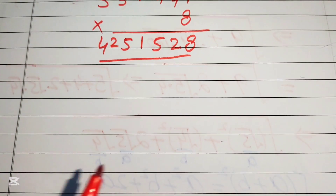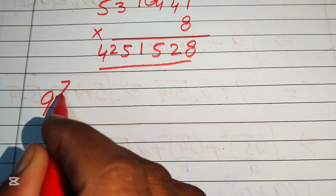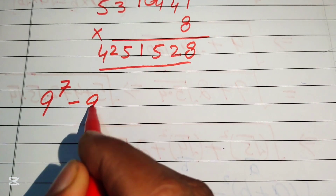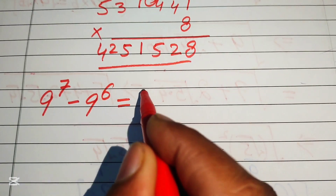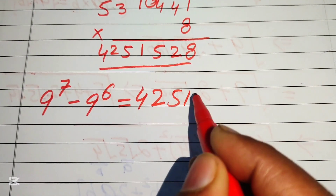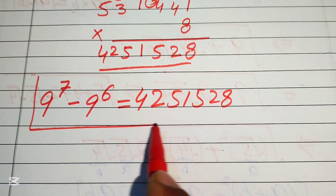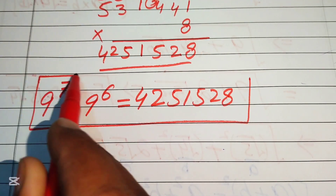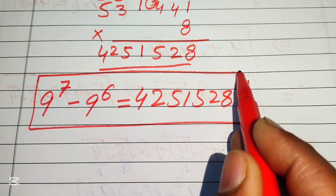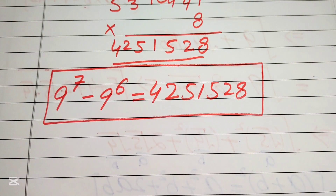Finally, the simplification of the given expression: 9 to the power of 7 minus 9 to the power of 6 equals 4,251,528. This is the final simplified form of the given algebraic expression. Thank you so much for watching this video — please subscribe to my channel for more exciting videos.